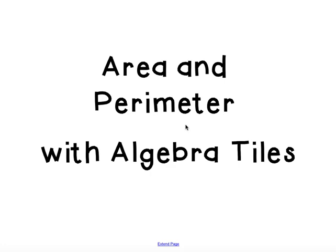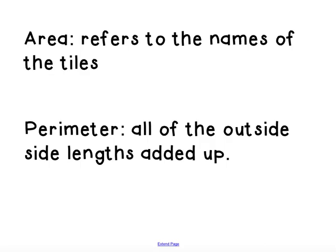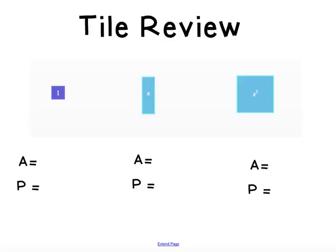This is about finding area and perimeter with algebra tiles. When we are talking about finding the area with algebra tiles, we're referring to the names of the tiles. And when we're talking about perimeter with algebra tiles, we're talking about all of the outside side lengths added together. So we'll do some examples.